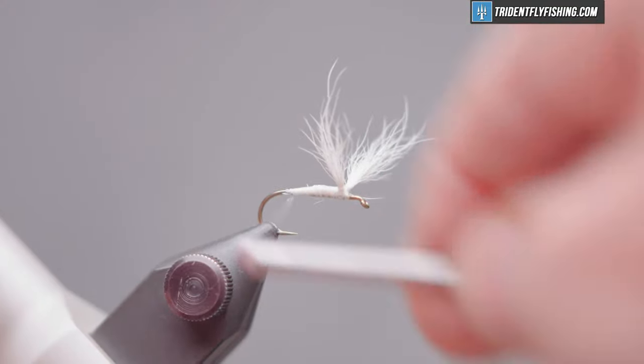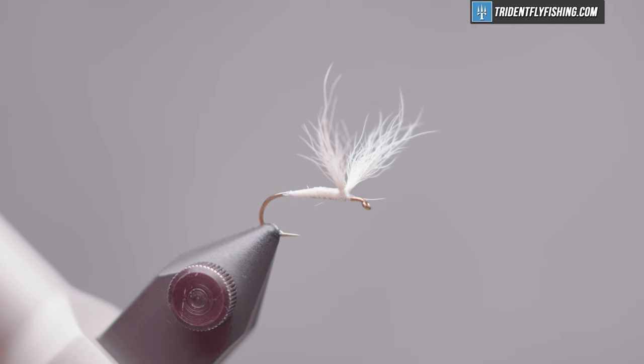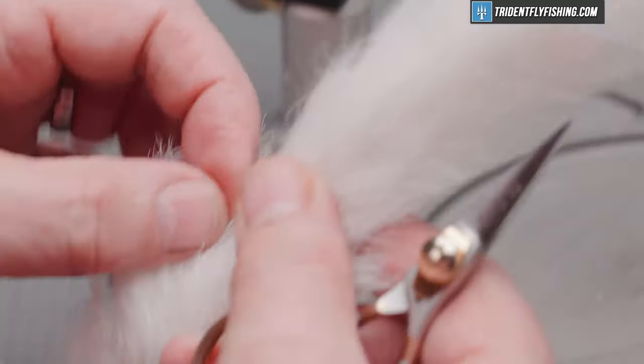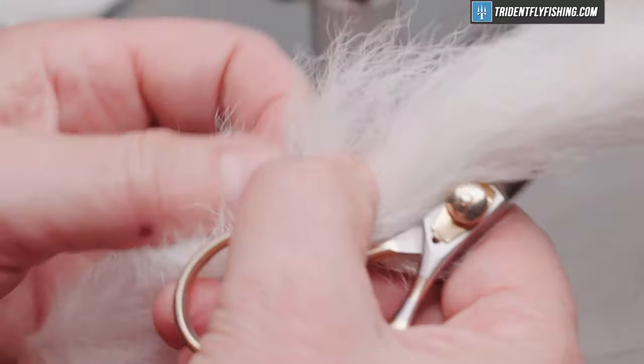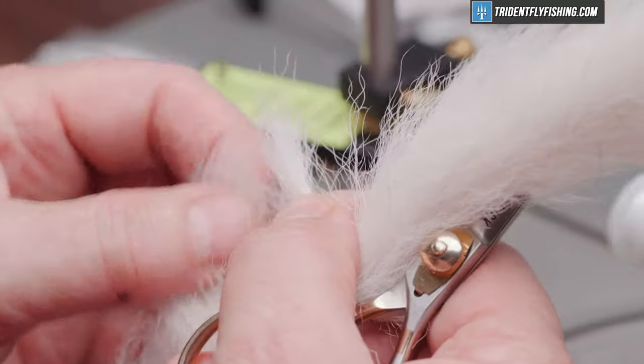We'll run our thread back to the start of the bend of the hook where we're going to tie in our tail material. That's going to be some more calf tail. Same as before. Pull some of the material out away from the tailbone. Get it perpendicular which tends to line the tips up.